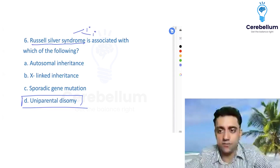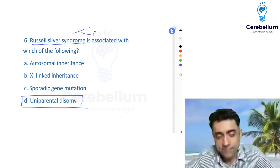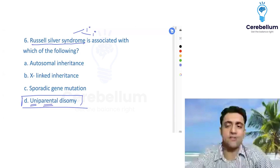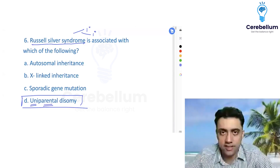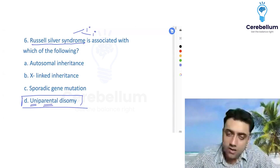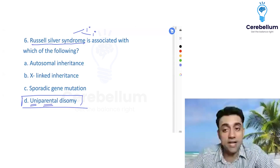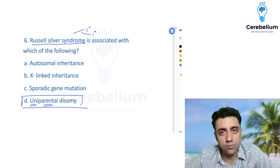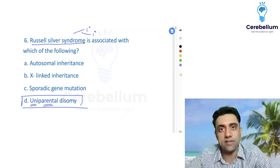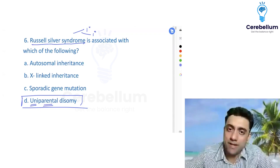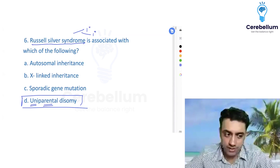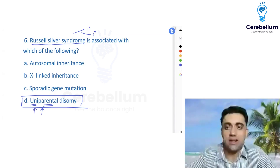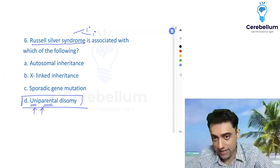In uniparental disomy, there is a problem where both genes are coming from the same parent — either from the father or from the mother.